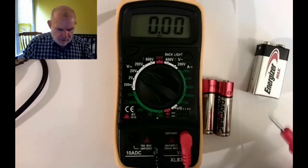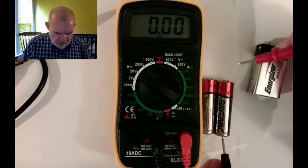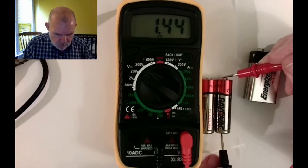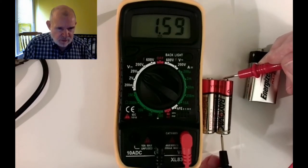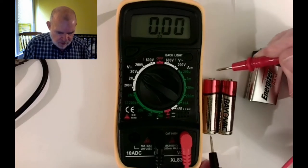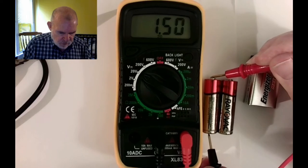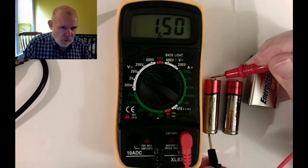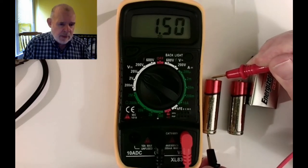Now I have a couple double-A batteries, let's check those. I think one is newer than another. One is like a new one, 1.58, 1.59 volts. And this other one, it's still good but this is 1.50. So it's probably not really brand new.